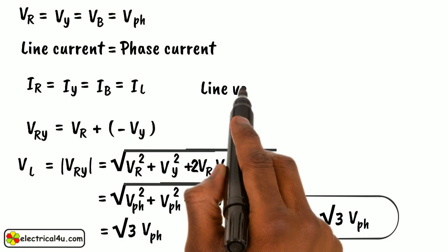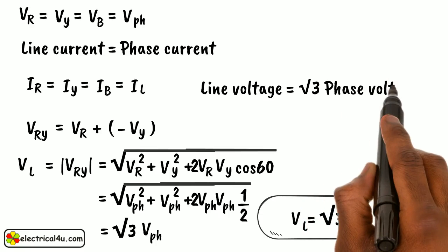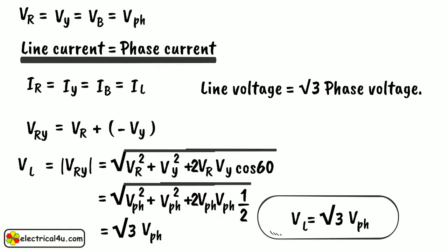Thus for the star-connected system, line voltage equals root 3 phase voltage. Line current equals phase current.